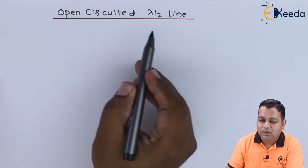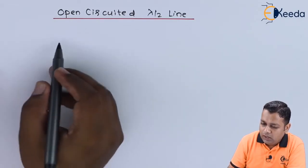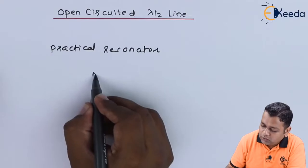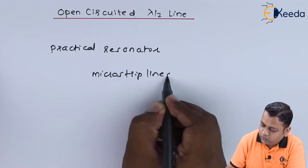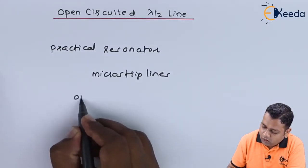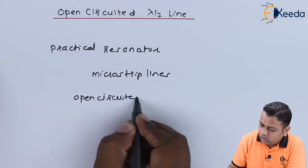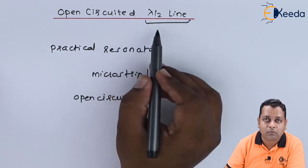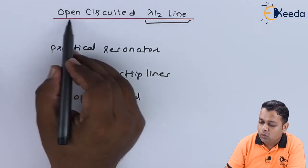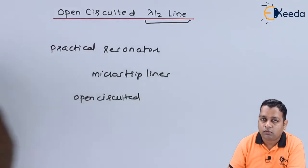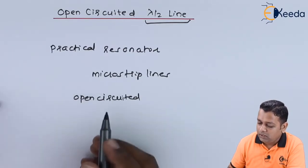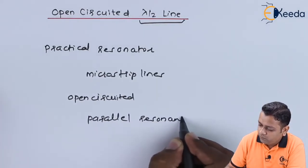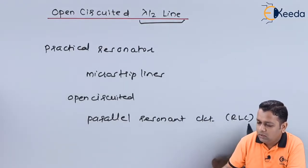Here we start with our topic: open-circuited λ/2 line. When we have a practical resonator, which is often used with the help of microstrip lines, practically we come to the condition that we have an open-circuited microstrip line. If we have a section of microwave transmission line having length λ/2, where λ is the wavelength, and if we keep the open-circuited condition, then we observe the performance of this microwave line section to be that of a parallel resonant circuit